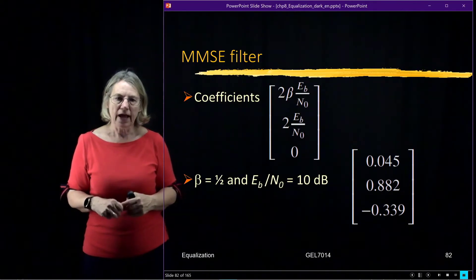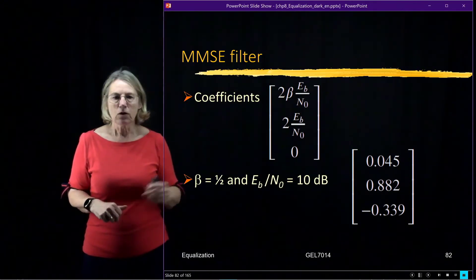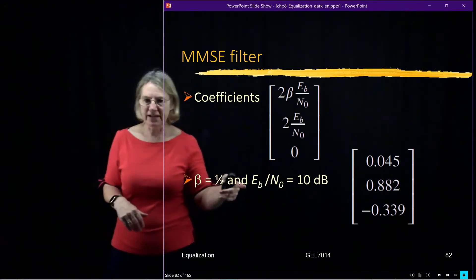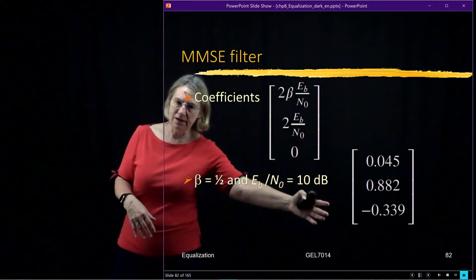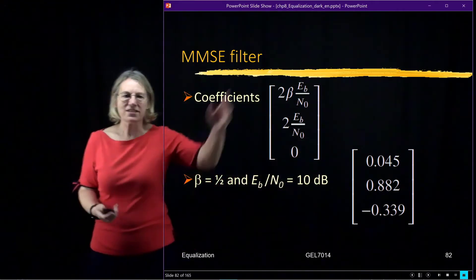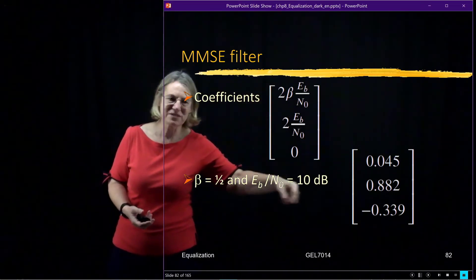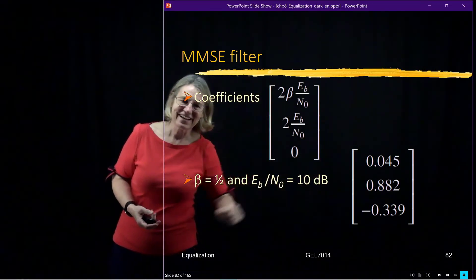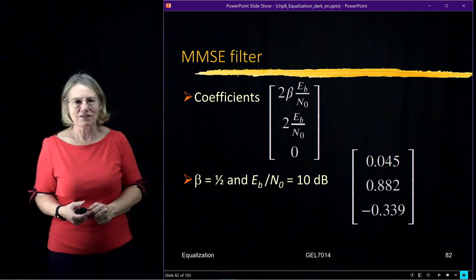Suppose I look at beta equal 1 half and EB over N0 equal 10 dB. Well then these would be the coefficients of the channel, sorry, this is the coefficient of the filter.